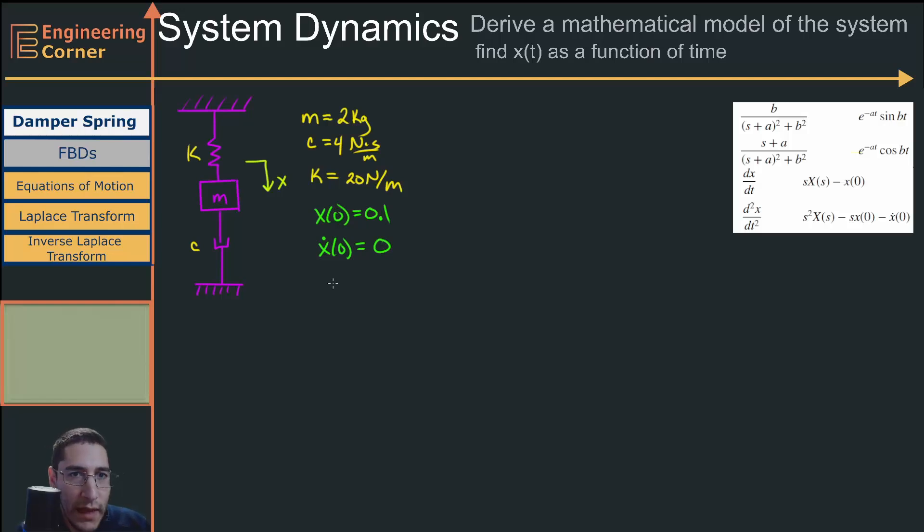What I'm really aiming to do in this video is show you what we've been building up to and how everything fits together. We're going to look at my system and do a free body diagram. Then from that free body diagram, figure out the equations of motion of the system. And from that, use Laplace transforms and inverse Laplace transforms to get x(t). So let's start by doing this free body diagram.